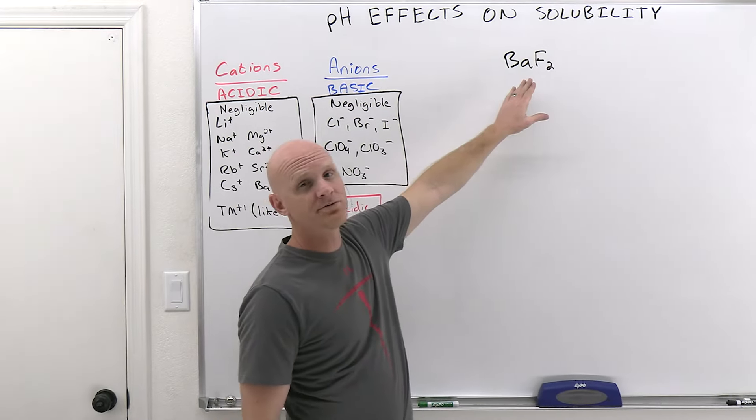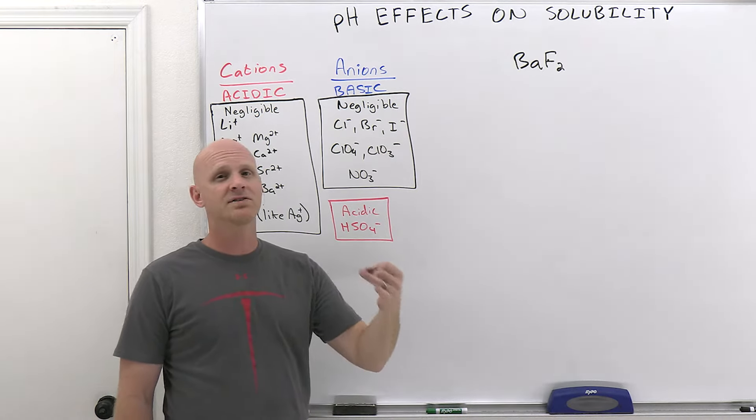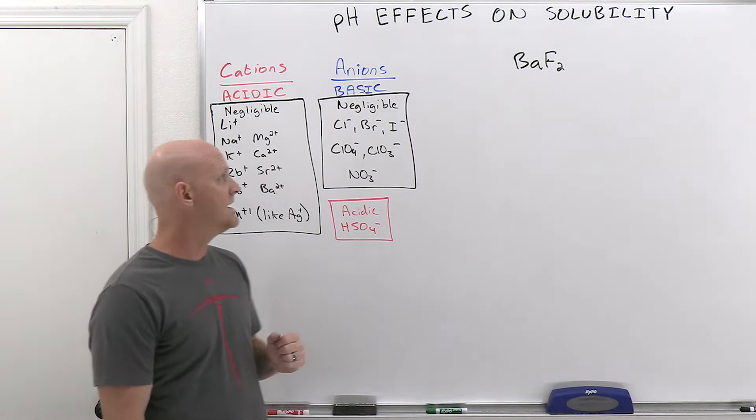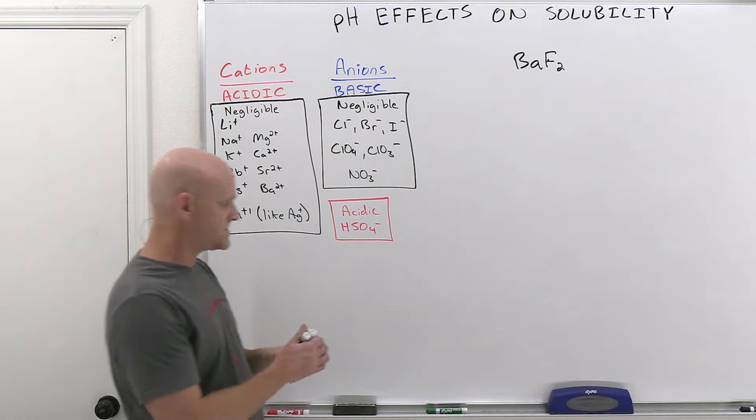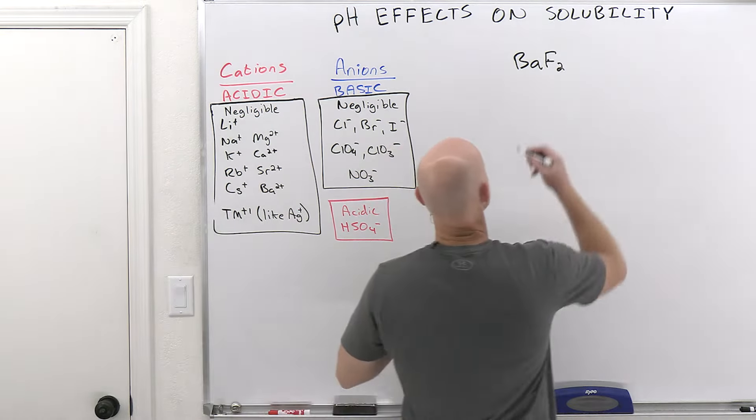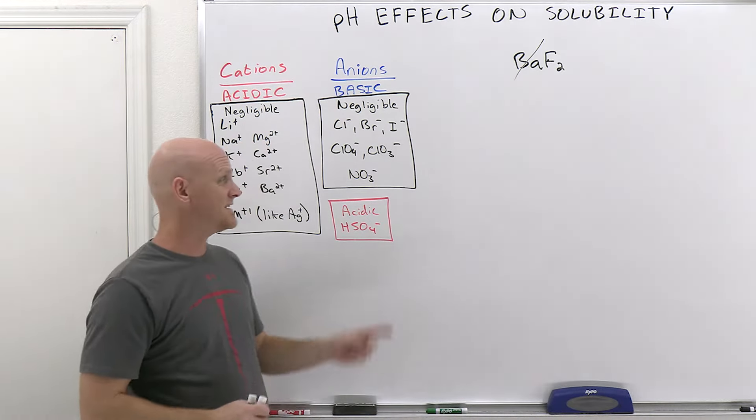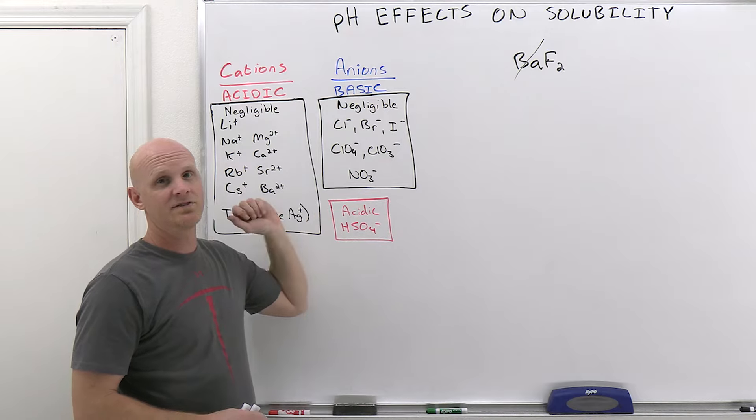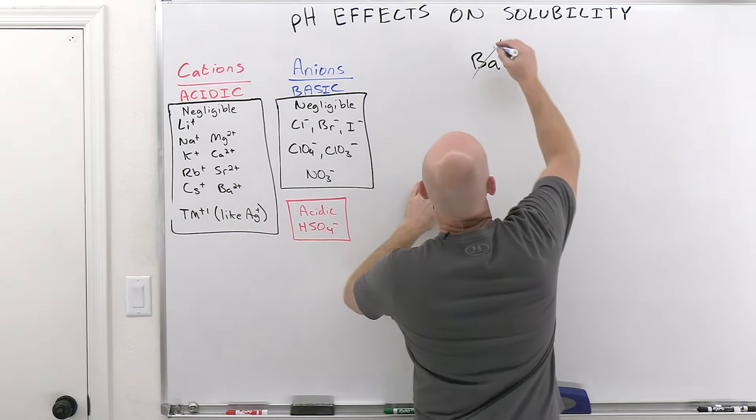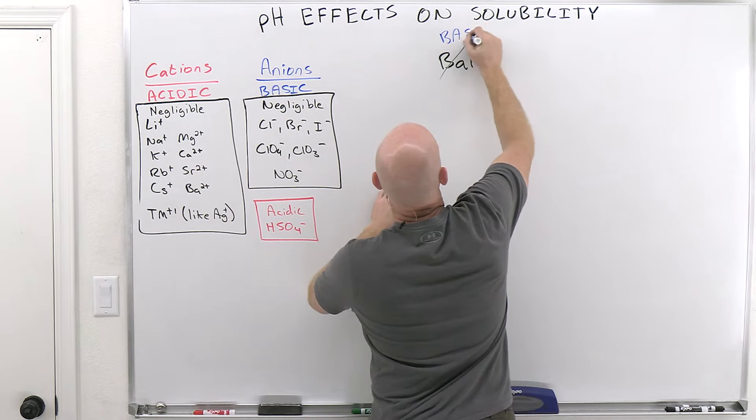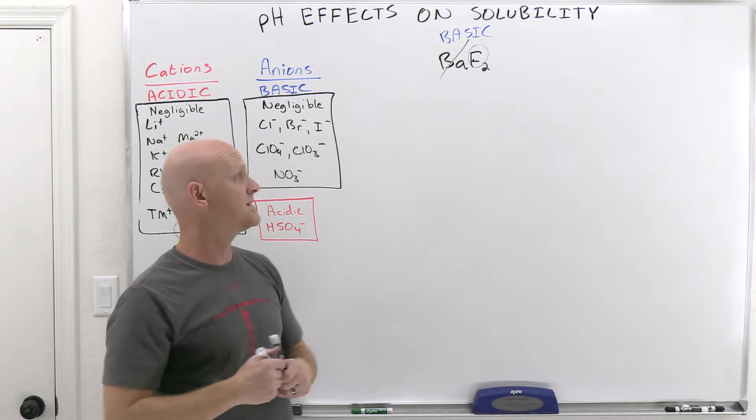So when we take a look at barium fluoride, we should first identify it as an acidic salt, a basic salt, or a neutral salt. In this case, we can see that barium ions, being a group two metal ion, they're negligible. So we'll just cross them off and ignore them. But fluoride as the anion, he's not in the negligible list, and he's going to be basic in this case. As a result, this is a basic salt, and it's fluoride itself that is the base.